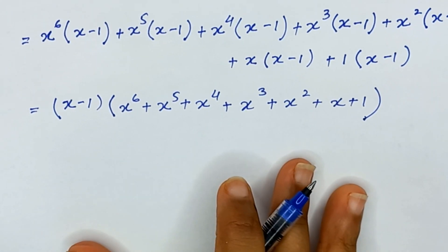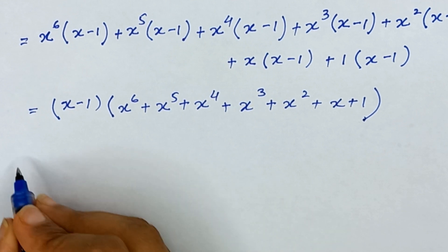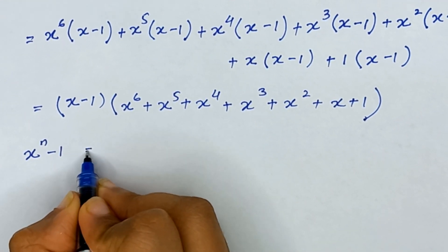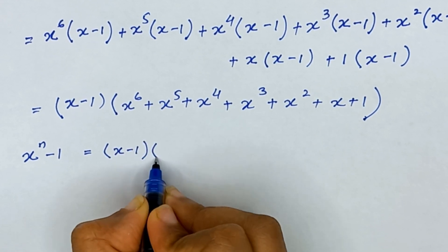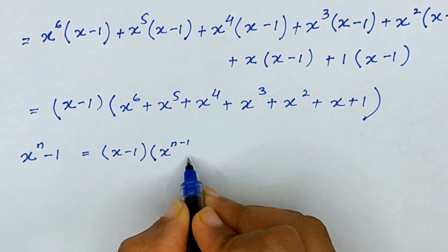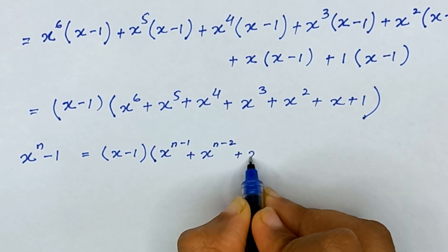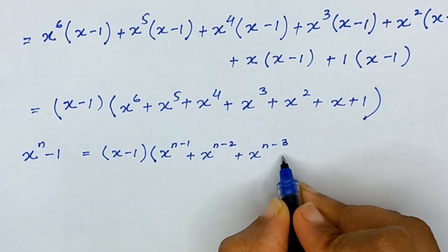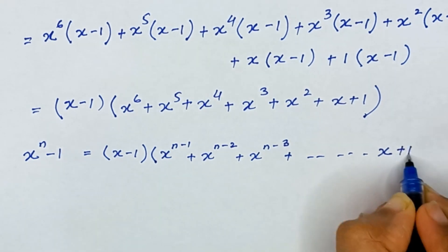Now x minus 1 is common in all terms, so the other factor is x raised to the power 6 plus x raised to the power 5 plus x raised to the power 4 plus x raised to the power 3 plus x square plus x plus 1. For the general formula, x raised to the power n minus 1 equals x minus 1 times x raised to the power n minus 1 plus x raised to the power n minus 2 plus up to x plus 1.